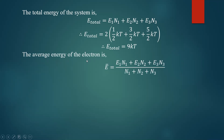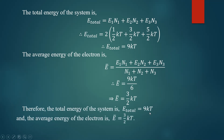Now find the average energy of the electron. The average energy is given by the total energy of the system divided by the number of electrons: E_average equals E_total divided by N. E_total is 9kT and the total number of electrons is 6, so E_average equals 9kT divided by 6, which gives an average energy of three-halves kT. Therefore, the total energy of the system is 9kT and the average energy of the electron is three-halves kT.